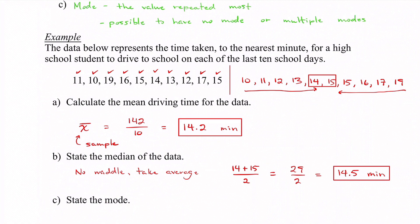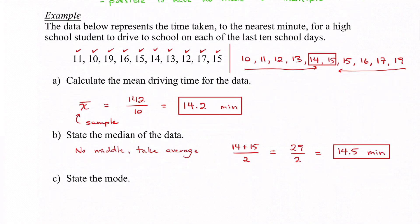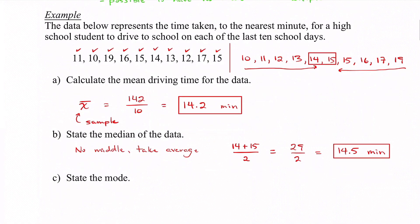Now we can look at mode. Remember, mode is just the number that repeats the most. The only number that actually repeated was 15 — we had two 15s. So our mode is simply 15 minutes.